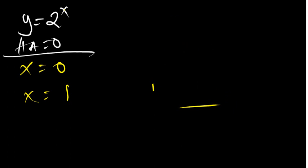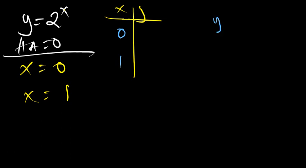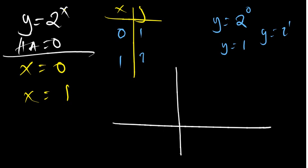So we have an x-y table. When x equals zero, y equals 2 to the power zero which is one. When x equals one, y equals 2 to the power one which is two. So our coordinates are (0, 1) and (1, 2). The horizontal asymptote is the line y equals zero. Now we can plot: (0, 1) is at x equals zero, y equals one, and (1, 2) is at x equals one, y equals two.